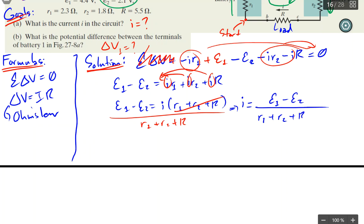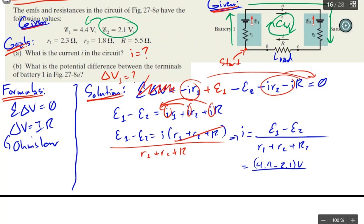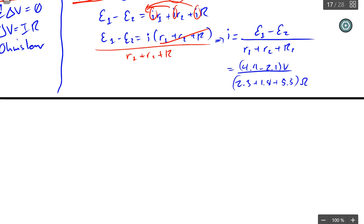Okay. So let's go ahead and solve this. This is simply 4.4 minus 2.1. I'm going to put the units on the outside. And we're having 2.3 plus 1.8 plus 5.5 ohms. Okay. Now I'm going to give you one guess what the units of this will be. And since we're looking for current, it should be in terms of amperes.